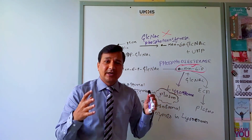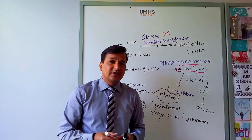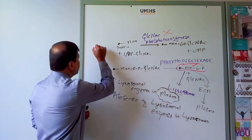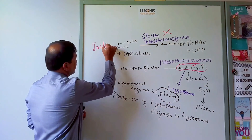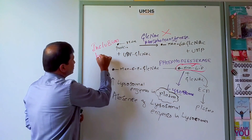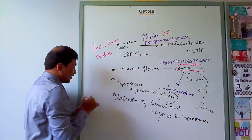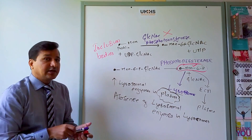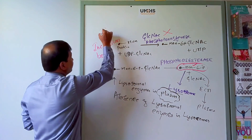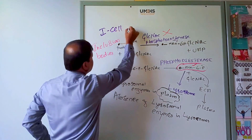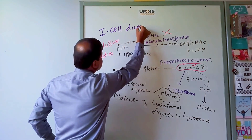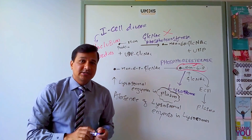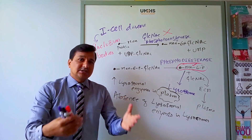All of these materials accumulated in the lysosomes are referred to as inclusion bodies. Because these inclusion bodies accumulate in the lysosome, the name of this disorder is I-cell disease — I for inclusion cell disease, because inclusion bodies are present there.